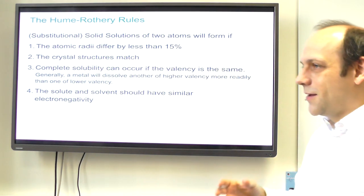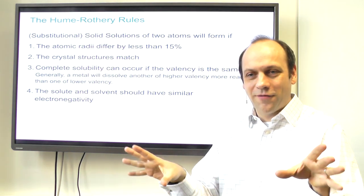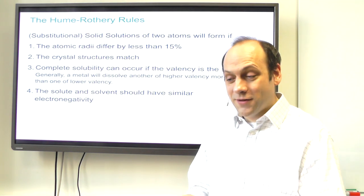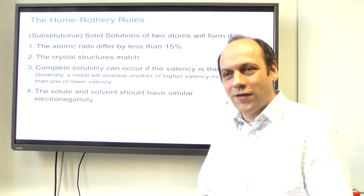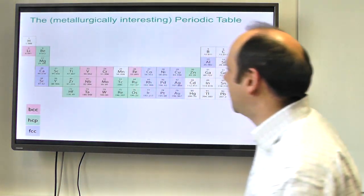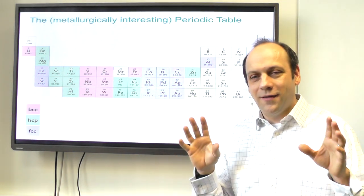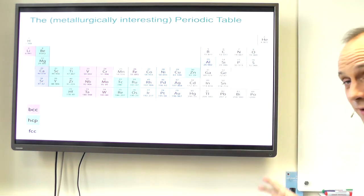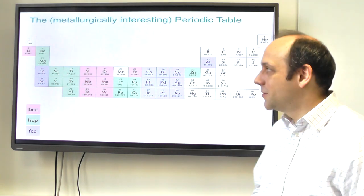In terms of solute and solvent: the solvent is the bath — say a bath of nickel — and the solute is what you're putting in, such as cobalt. They should also have similar electronegativity, the energy of the outer shell. Here's a periodic table cut down to the most commonly interesting elements for metallurgy, coloured by their crystal structure as isolated pure species.